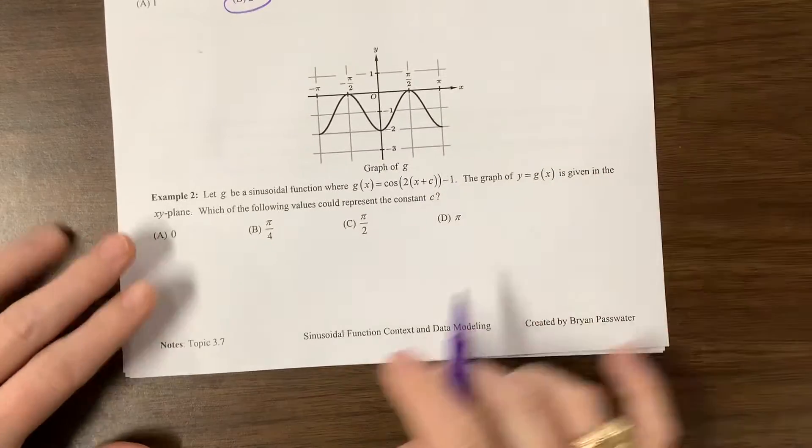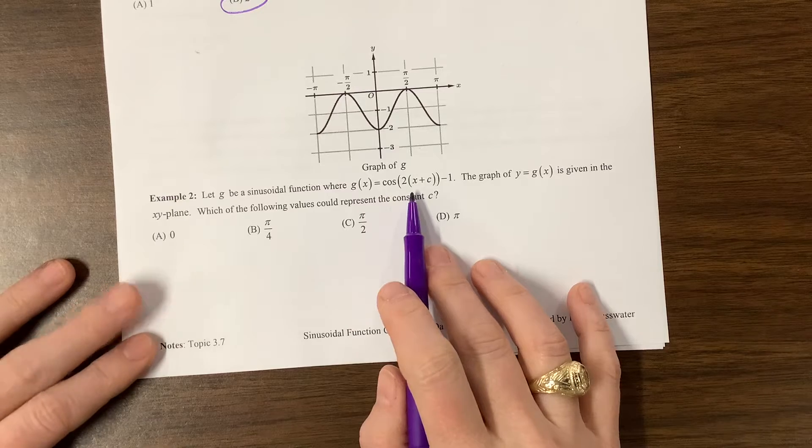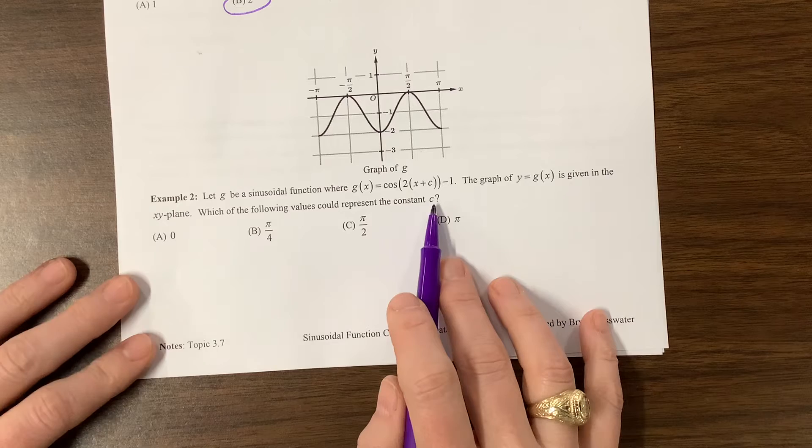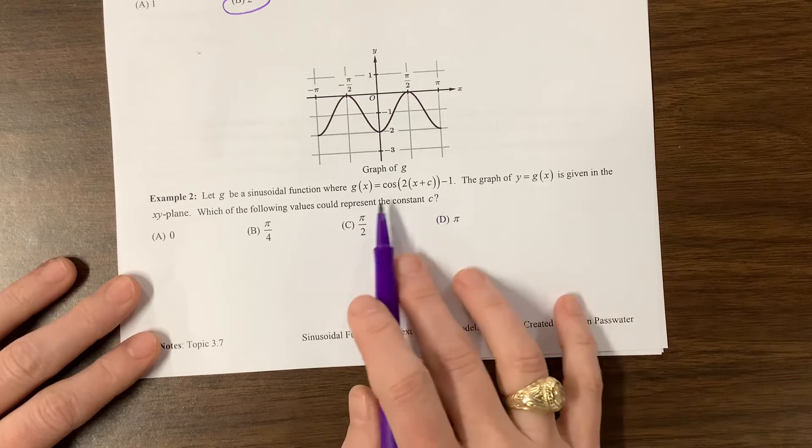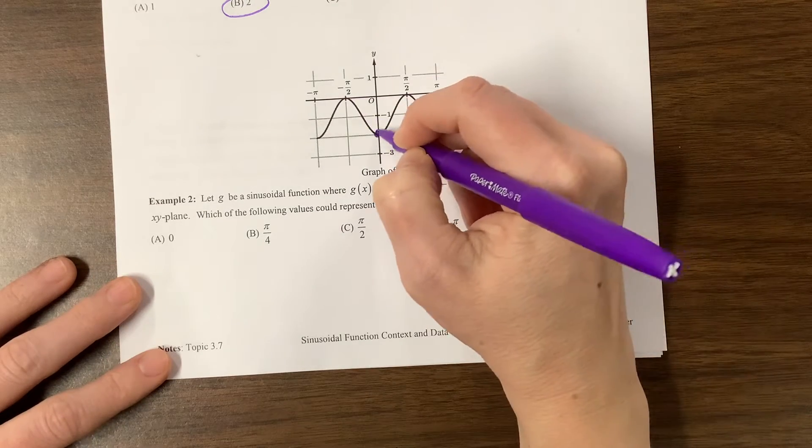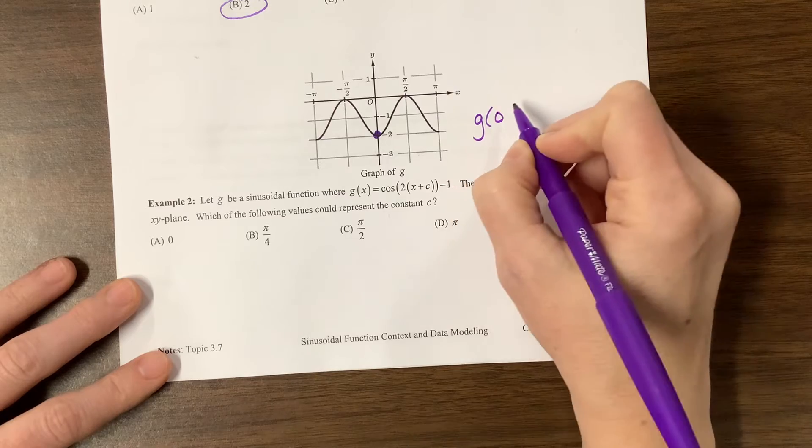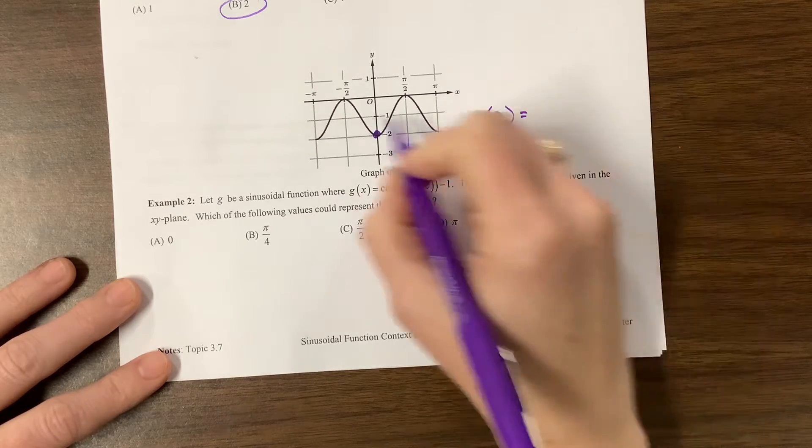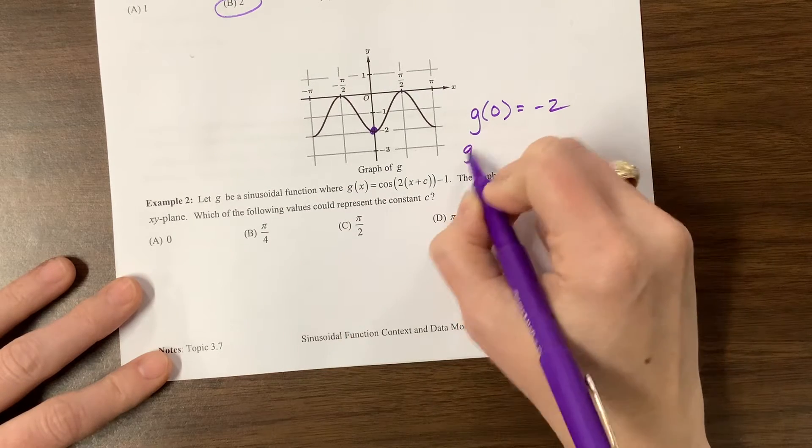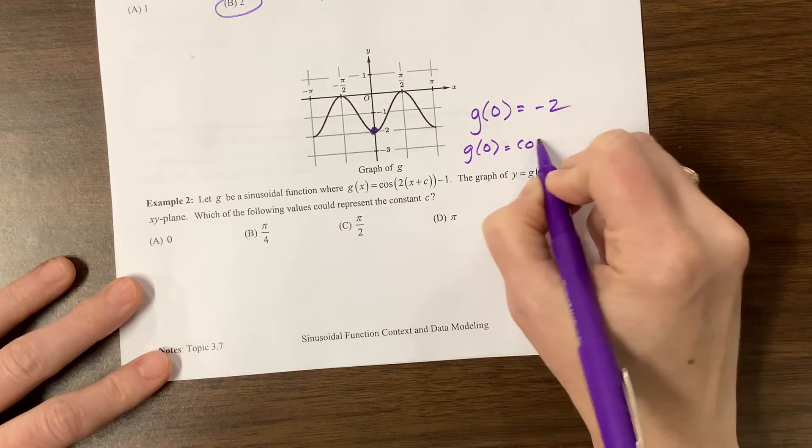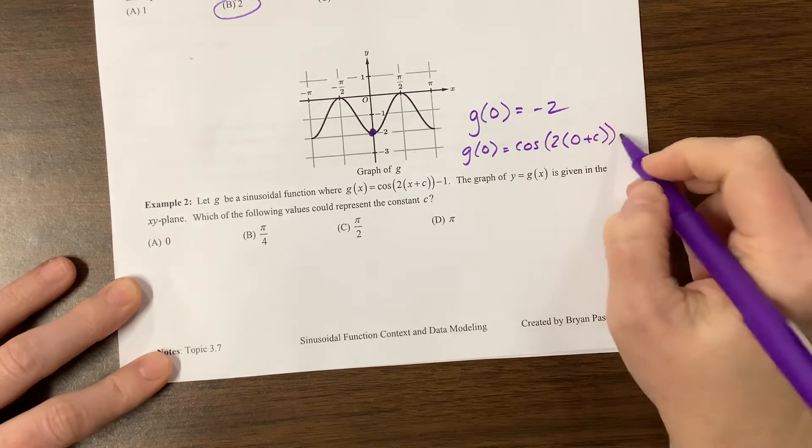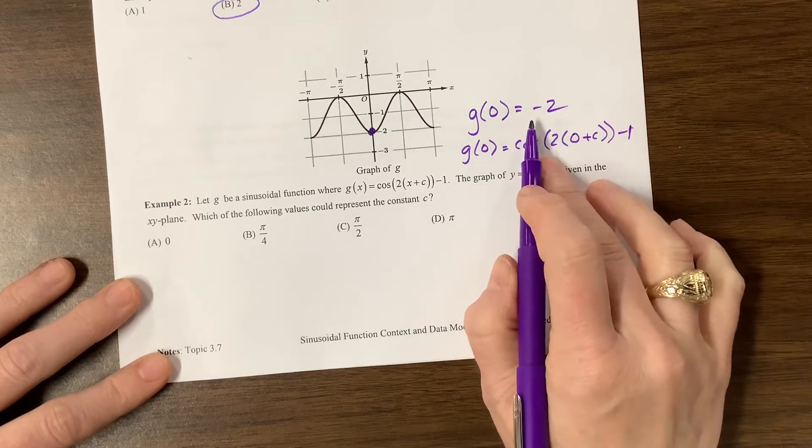Next one. We have a sinusoidal function, and they've given us the equation. The graph is given in the XY plane, which of the following could represent C. So, if it's cosine, what I might do is I might pick this point. I have the point where G of 0 equals negative 2.